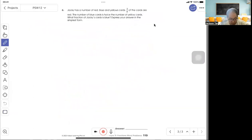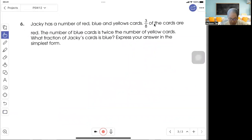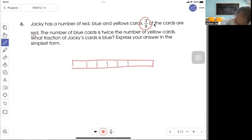Question 6. Jackie has a number of red, blue, and yellow cards. Three-eighths of the cards are red. So let's draw eight units. So this is my red.